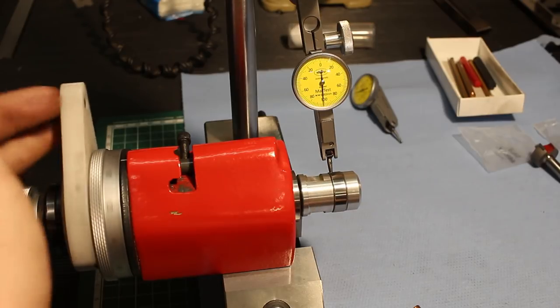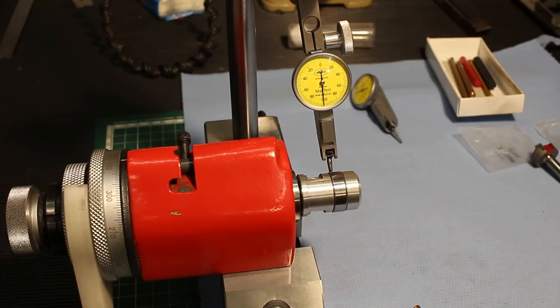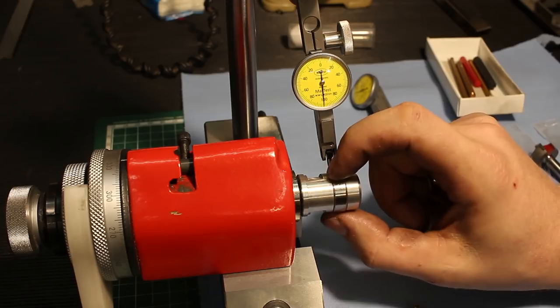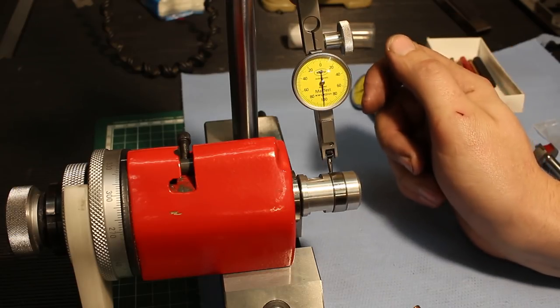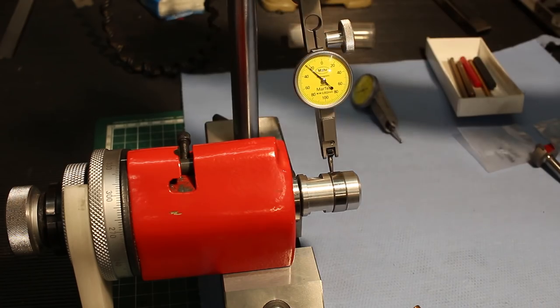That's pretty darn good. Now we can take this whole assembly without the indicator, of course, drop it onto the surface grinder and grind the OD of this bearing down to 21.5 millimeters.